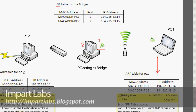ARP stands for Address Resolution Protocol. Its job is to resolve IP addresses into MAC addresses. As you can see from the table, every IP address has an associated MAC address. ARP sends out ARP requests to computers on the same subnet, and the destination computer responds with a reply containing the ARP entry from its own table, sending it back to the computer that requested it.